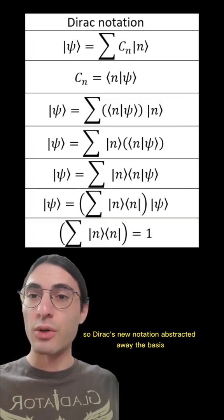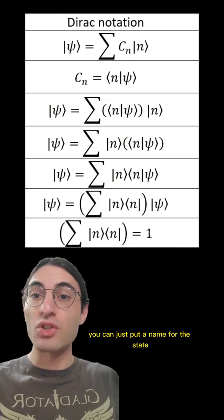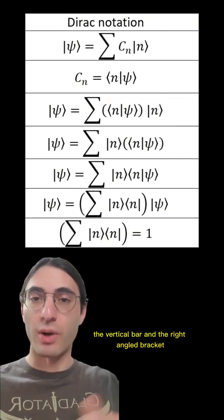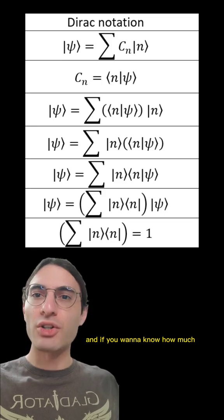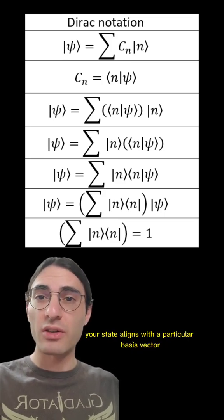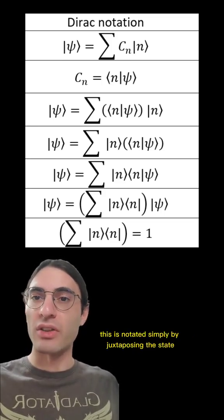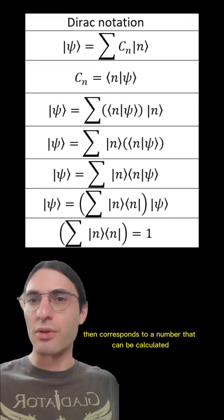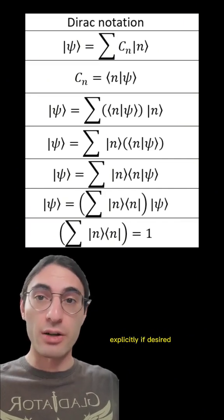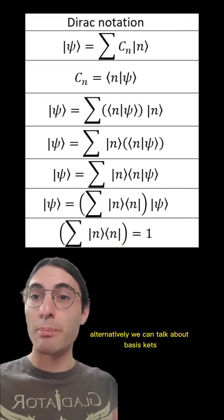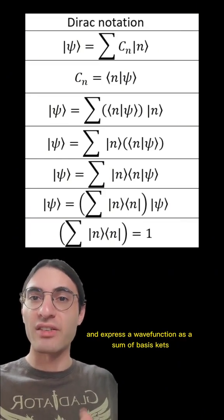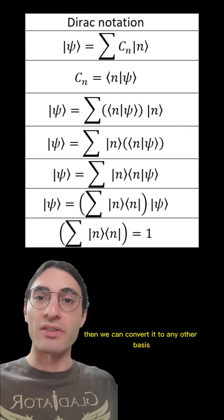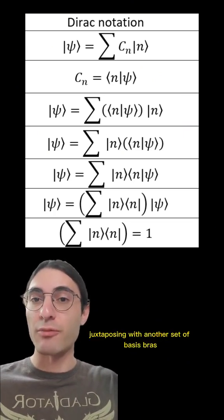So Dirac's new notation abstracted away the basis. You can just put a name for the state — say, psi — in a ket, the vertical bar and the right-angled bracket. And if you want to know how much your state aligns with a particular basis vector, this is notated simply by juxtaposing the state ket with the basis vector bra. This then corresponds to a number that can be calculated explicitly if desired. Alternatively, we can talk about basis kets and express a wave function as a sum of basis kets, then convert it to any other basis simply by juxtaposing with another set of basis bras.